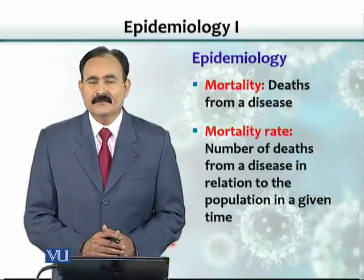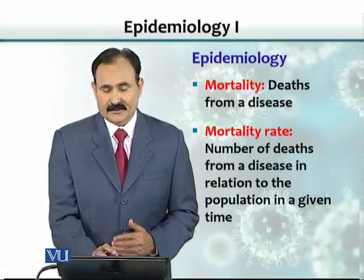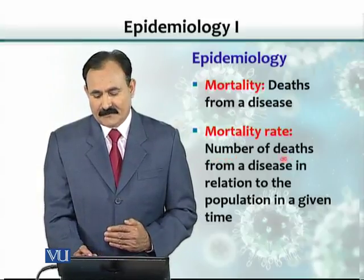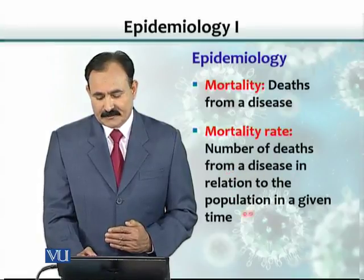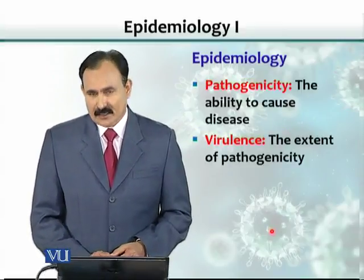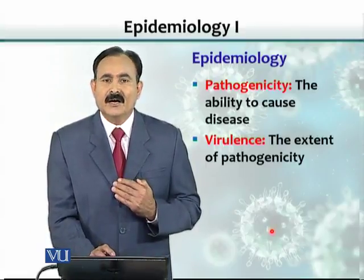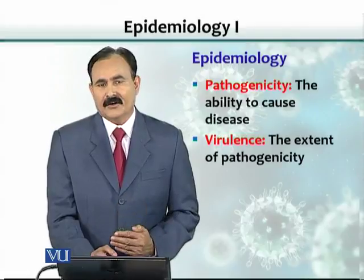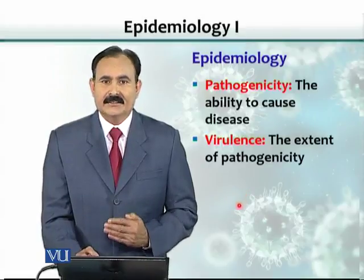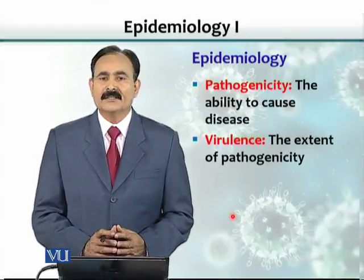Similarly, if someone dies from a disease, that is called mortality. The mortality rate is calculated based on the number of deaths from a disease in relation to the population in a given time. Pathogenicity is the ability of an infectious organism to cause a disease, while virulence is the extent of that pathogenicity — some organisms are less virulent than others.